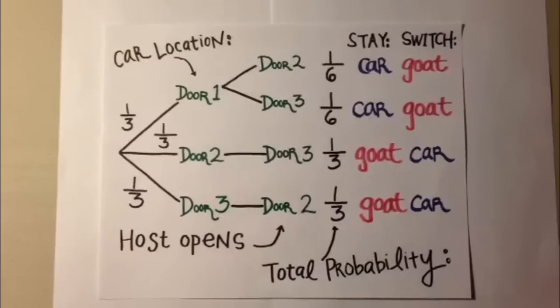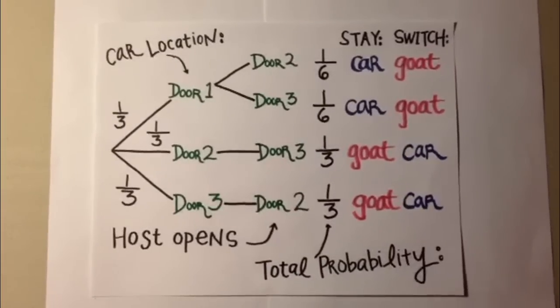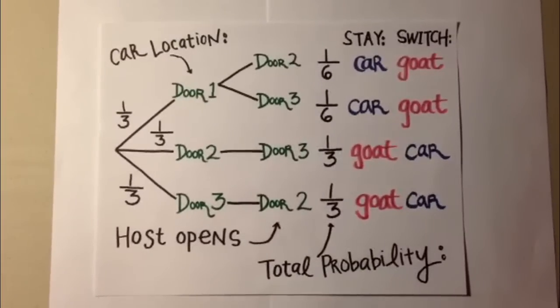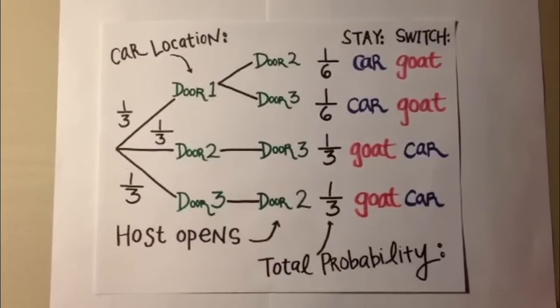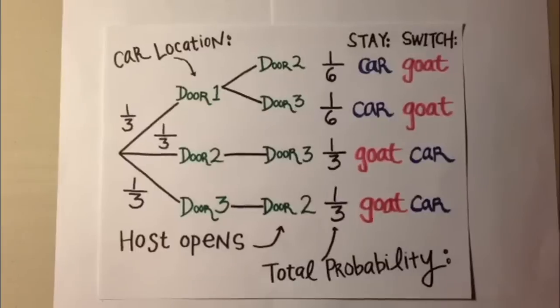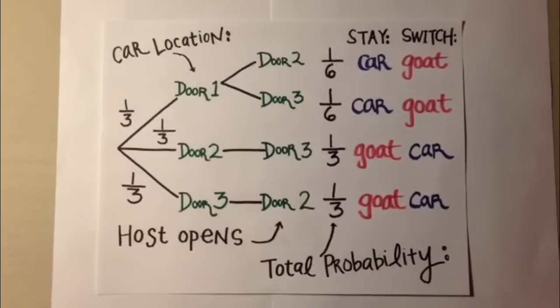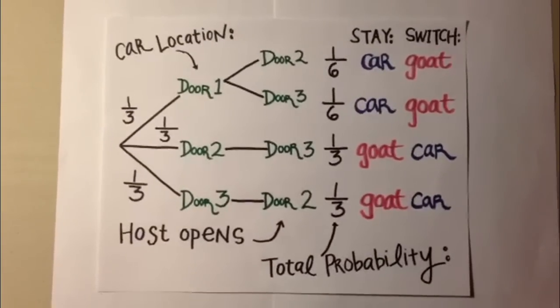Simply put, if the contestant picks a goat, they will win a car by switching as the other goat can no longer be picked. If the contestant picks the car, they will not win the car by switching. So if you switch, you win the car if you originally picked the goat, and you won't if you pick the car. As you have a two in three chance of originally picking a goat, you have a two in three chance of winning by switching.